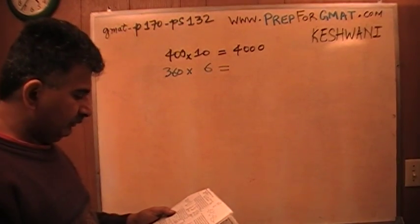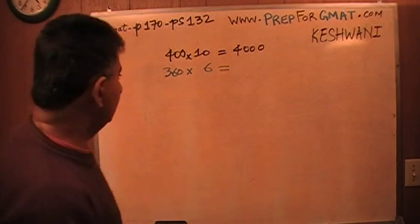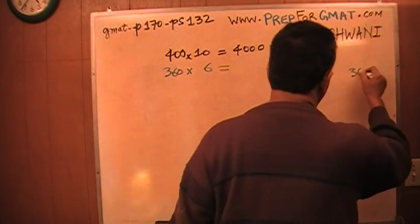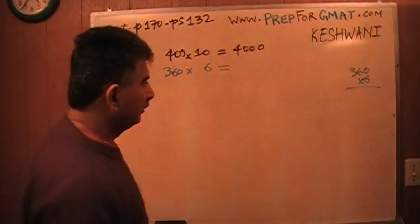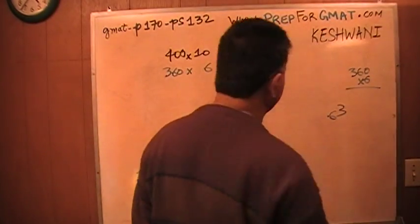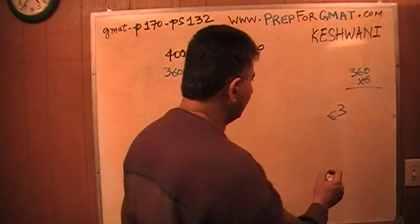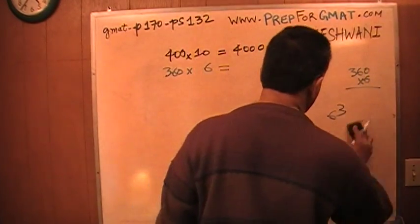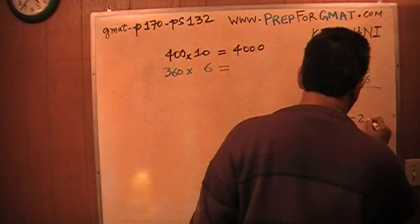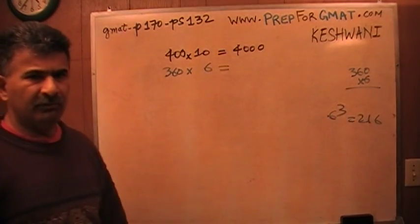And what is 360 times 6? If you don't know, do it out. But for those who can figure out quickly what 6 cubed is, that's what that is. Because 6 times 6 is 36, and 36 times 6 is 216.